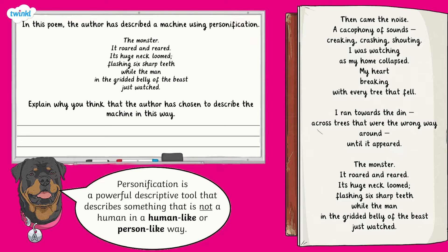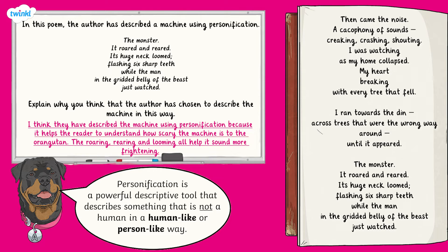Do you have an answer? Great, let's take a look at the question. In this poem, the author has described a machine using personification — 'The Monster. It roared and reared, its huge neck loomed, flashing six sharp teeth while the man in the gridded belly of the beast just watched.' Explain why you think the author has chosen to describe the machine in this way. This question is subjective, meaning based on your own ideas or opinions. An example answer: I think they described the machine using personification because it helps the reader understand how scary the machine is to the orangutan. The roaring, rearing and looming all help it to sound more frightening. Remember, your answer might be different.